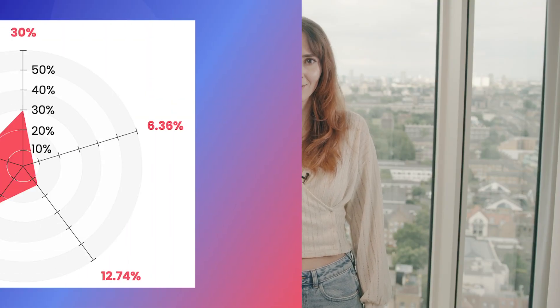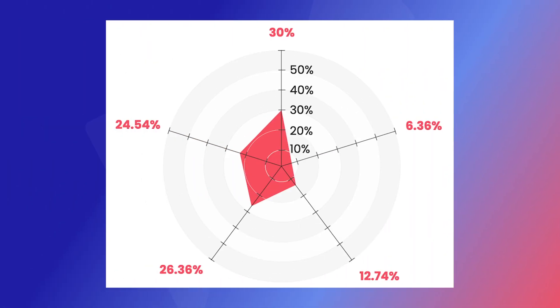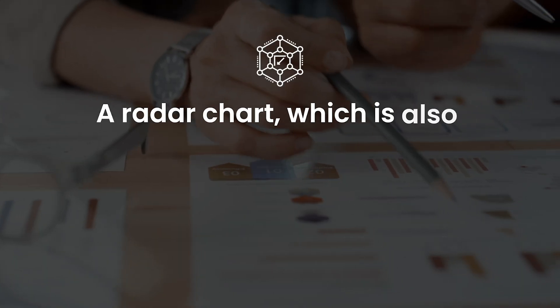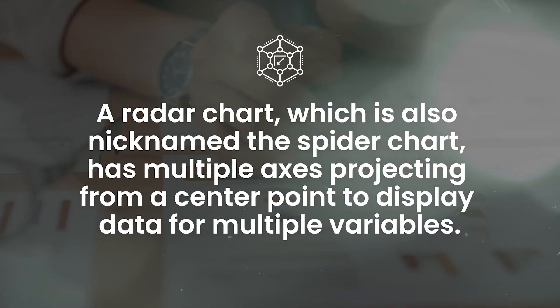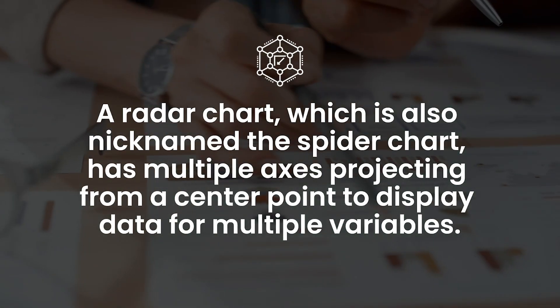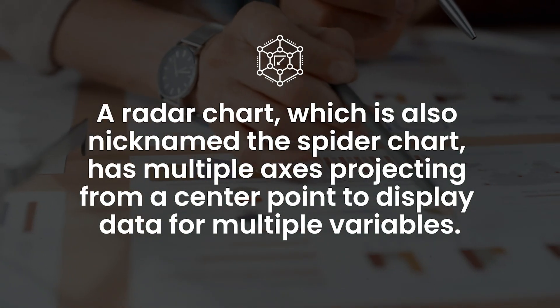Finally, let's talk about the radar chart. A radar chart, also nicknamed the spider chart, has multiple axes projecting from a center point to display data for multiple variables. It's best for comparing multiple metrics like financial KPIs across business units or departments to see performance patterns and profiles.